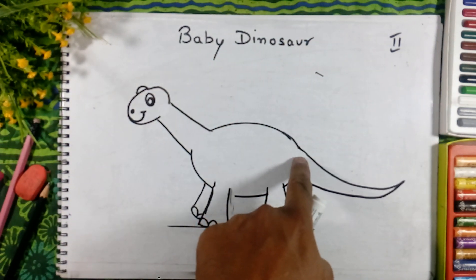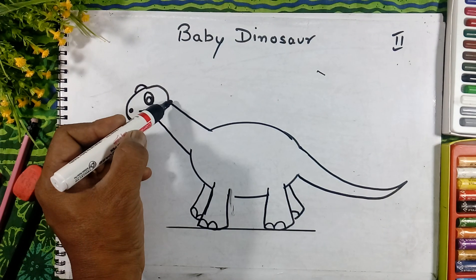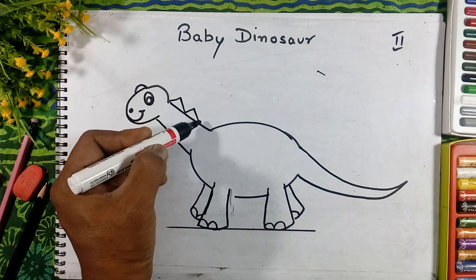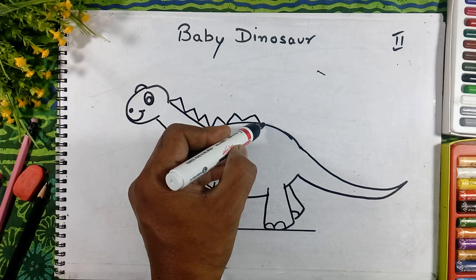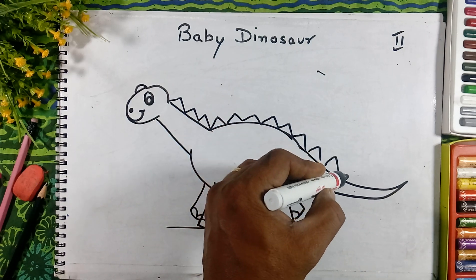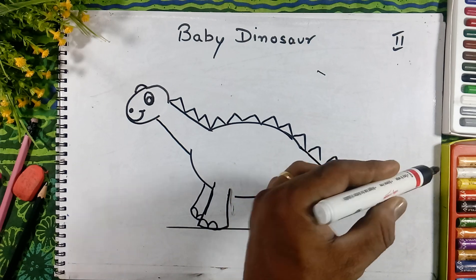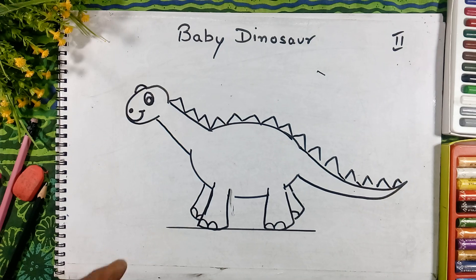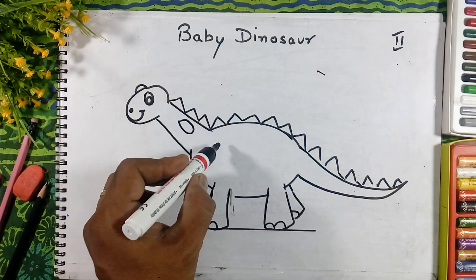Now we will draw a long tail on this side — big at this end and like a V at the other end. We will drop this line and make the V shape.